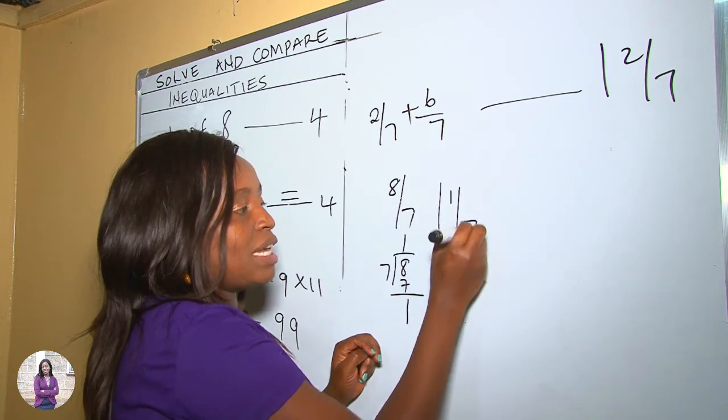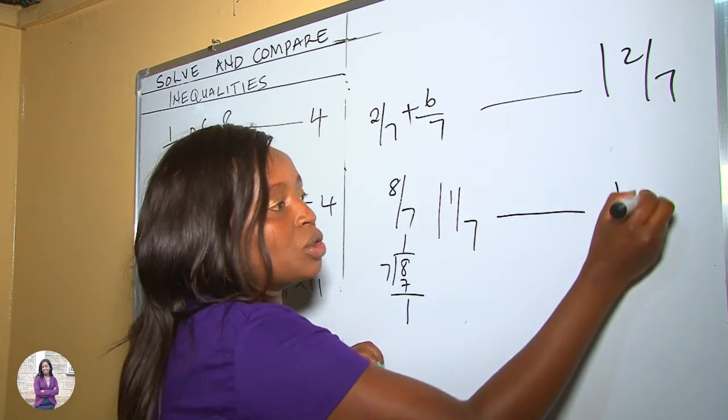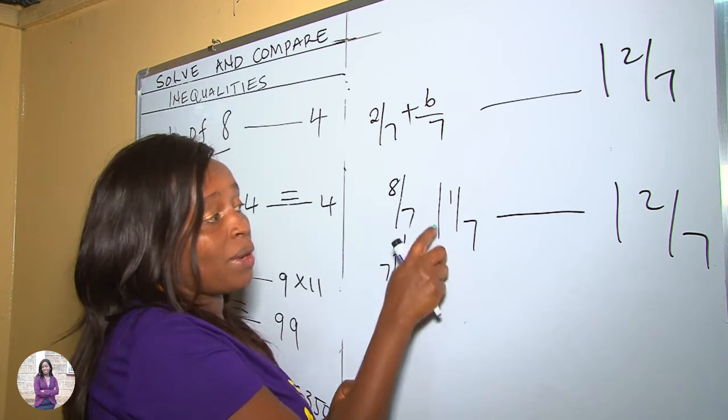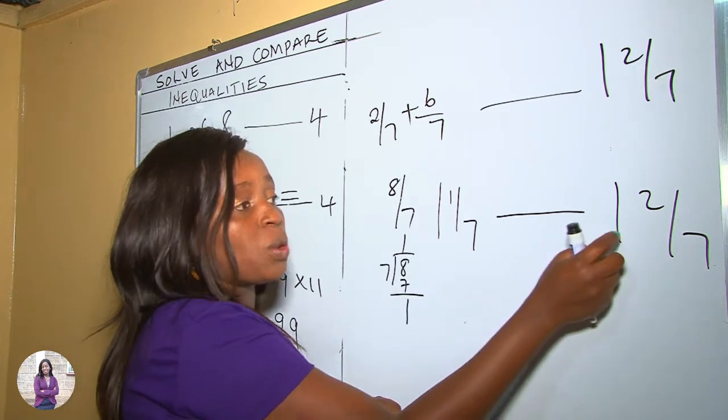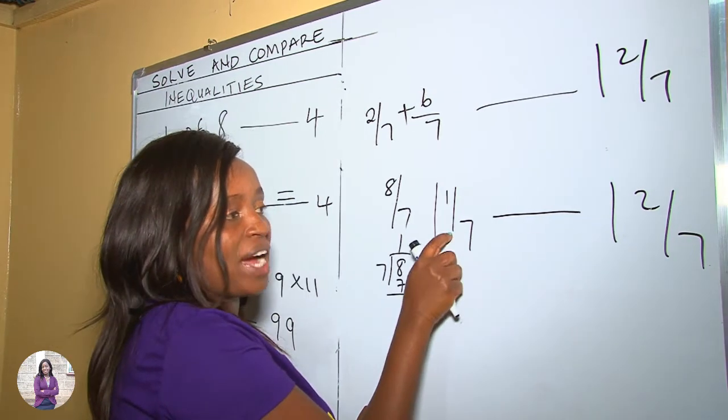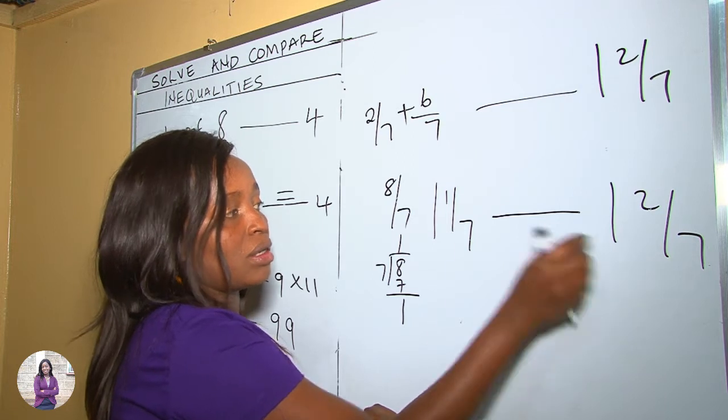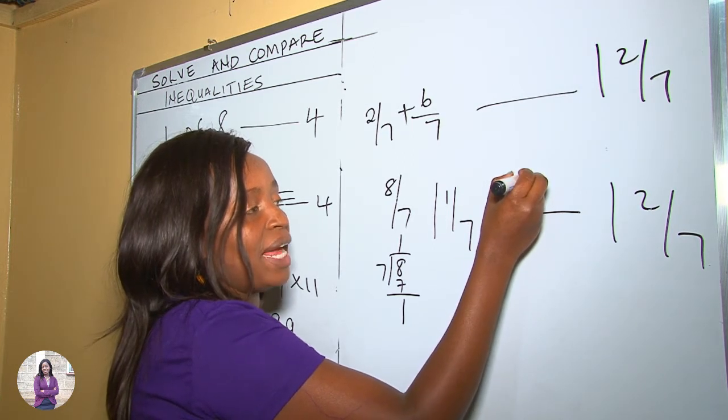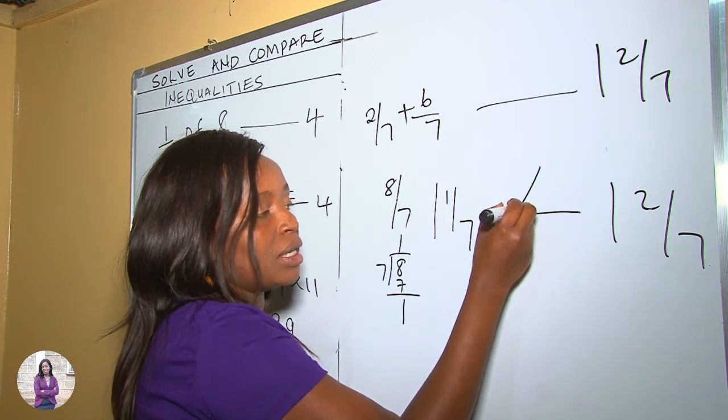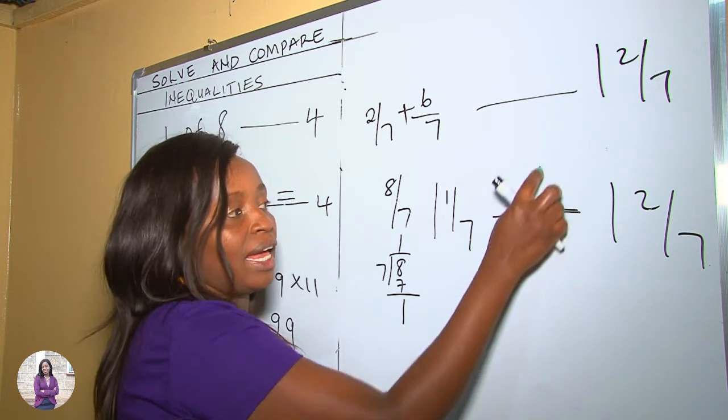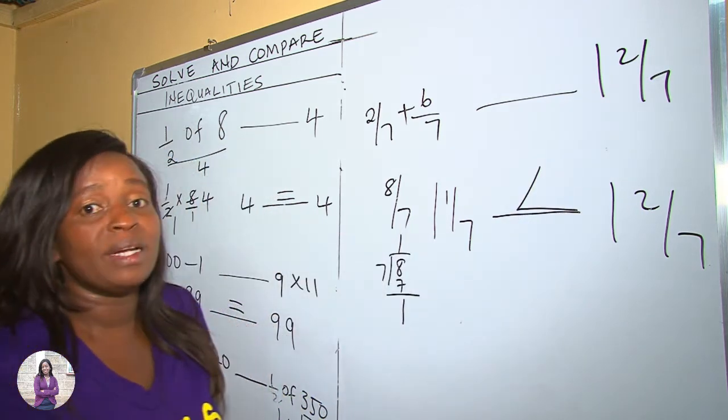So it's going to be 1 and 1 over 7. The dash is still there. 1, 2 over 7. When you compare 1 and 1 over 7 and 1, 2 over 7, this one is less than this one, so we put the sign for showing less than, which is L, L for less than. Let's work out our next example.